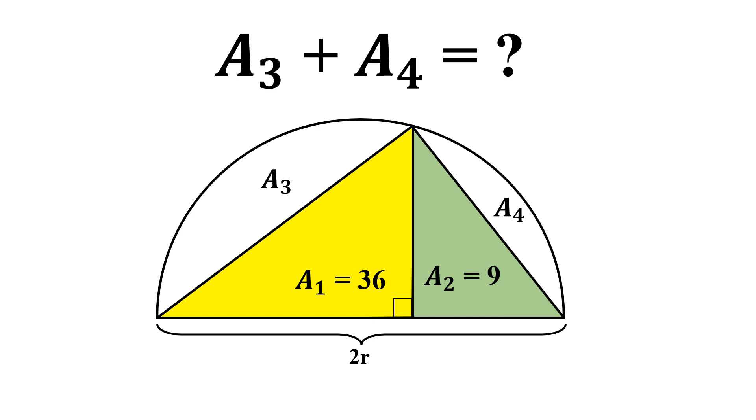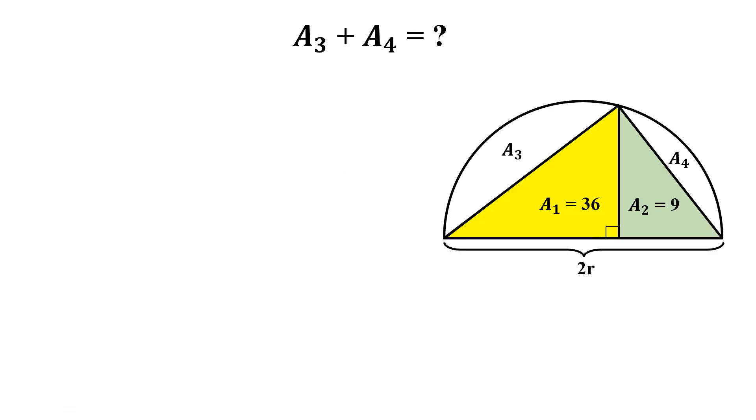Hi everyone, in today's video we are going to solve this question. But before starting the solution, like the video, and if you are new on my channel please subscribe. Let's begin to solve the question. The question is: this yellow area is 36, this green area is 9. How to calculate this area A3 and this area A4?